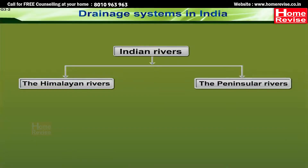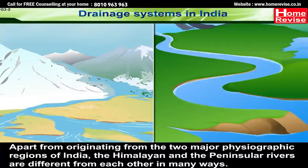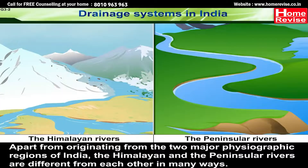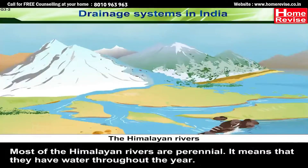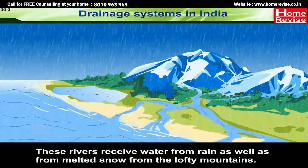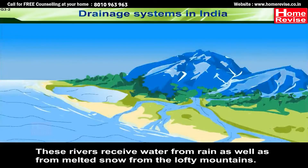Apart from originating from two major physiographic regions, the Himalayan and the peninsular rivers differ from each other in many ways. Most of the Himalayan rivers are perennial, meaning they have water throughout the year. These rivers receive water from rain as well as from melting snow from the lofty mountains.